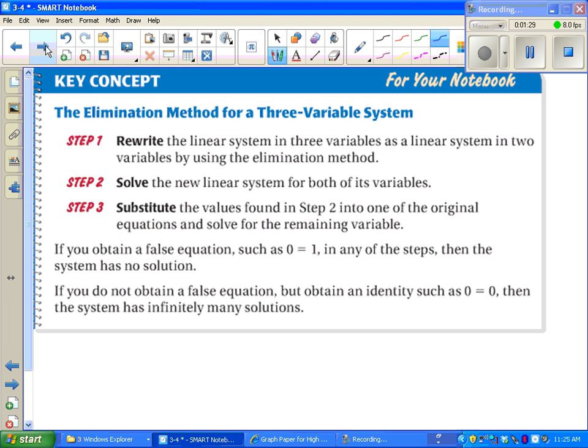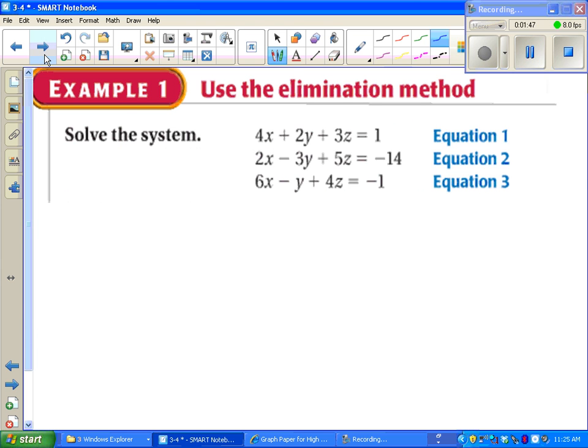And the process is exactly like elimination that we saw with two variables. Step one says get rid of x, y, or z. Step two says, with your two letters that are left, solve for them. And step three says go back to the original equation and figure out your missing piece. Let's take a look what that means in a problem.